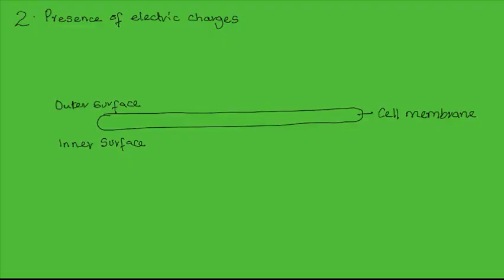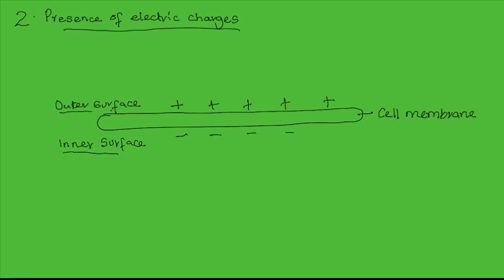The second property of the cell membrane that influences the movement of substances in and out of the cell is the presence of electric charges. An electric charge can be positive or negative. In most cells, the outer membrane surface has a positive charge, so positive charges are spread over the outer surface, while the inner surface of the cell membrane has a negative charge, with negative charges spread over the inner surface.